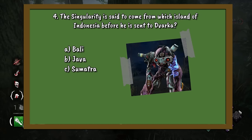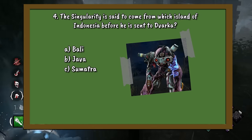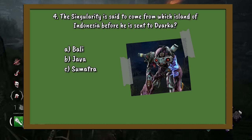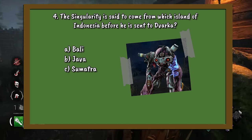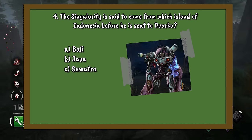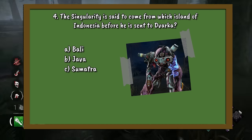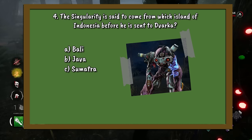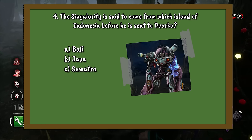Question number 4. The Singularity is said to come from which island of Indonesia before being sent to Dvaka? A. Bali. B. Java. Or C. Sumatra.